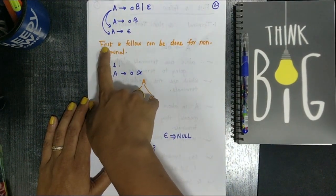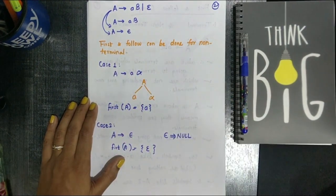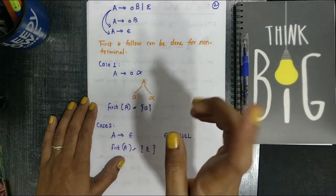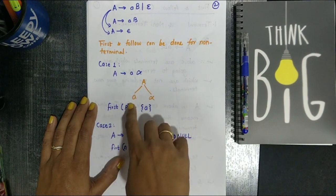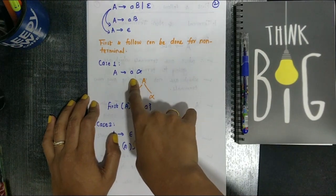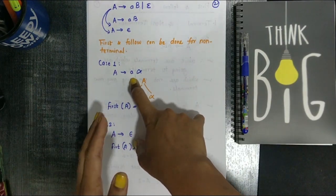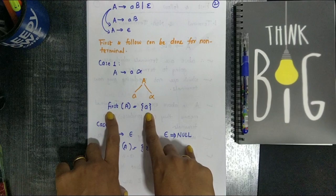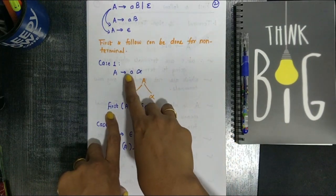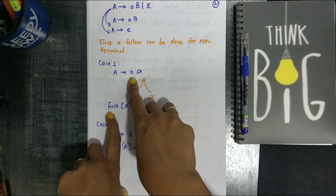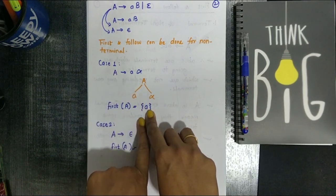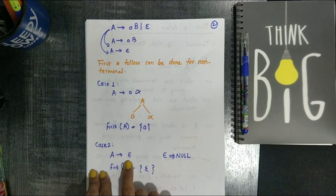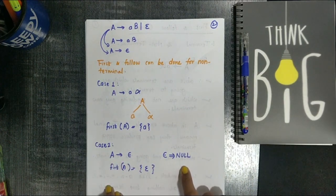For the First concept, Case 1: if A tends to a·alpha, there are two symbols — 'a' and alpha. Whatever terminal symbol comes first while deriving the non-terminal A, that is the First of A. So First(A) = {a}. That is Case 1 — you are getting the terminal symbol at the first position, so that terminal is the First of your variable A.